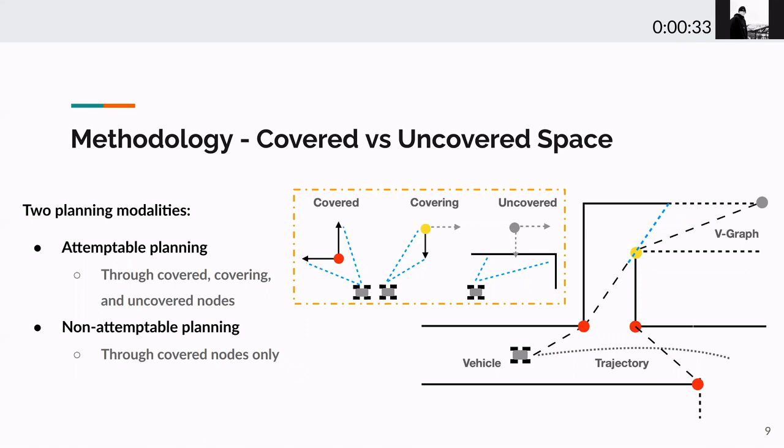Specifically, if a node has both edges on the polygon observed by the robot, the node is considered a covered node. If a node has only one edge observed by the robot, it is a covering node, meaning that it is halfway covered. If the node has no edge observed, it is uncovered. In the attemptable planning, the path search propagates through both covered and covering nodes, while in non-attemptable planning, it only propagates through covered nodes, based on Dijkstra's algorithm.